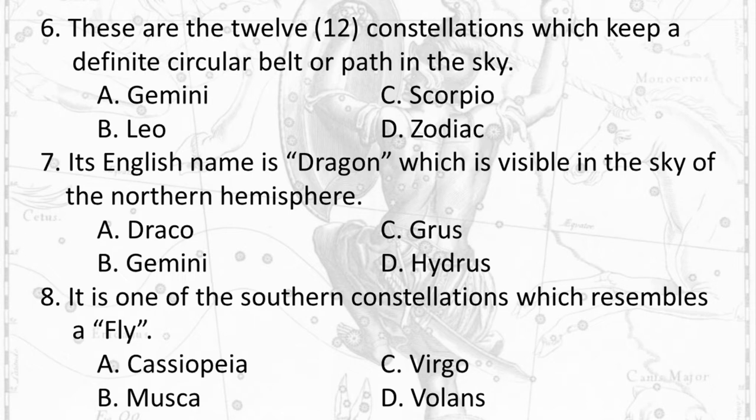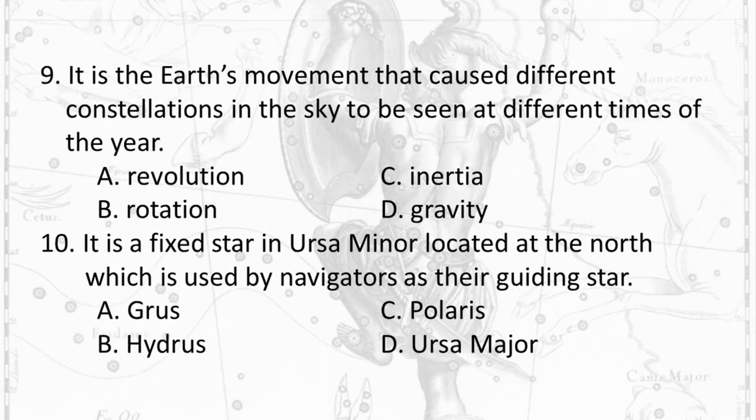Question 8: It is one of the southern constellations which resembles a fly. A. Cassiopeia B. Musca C. Virgo D. Volans.